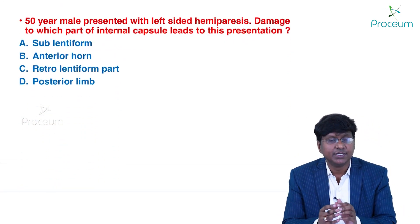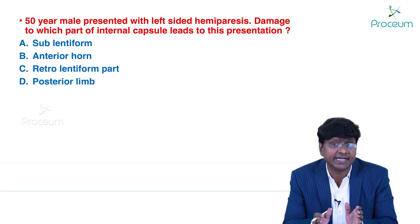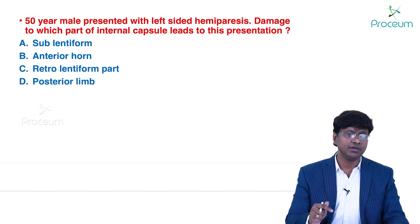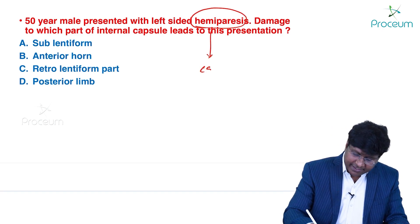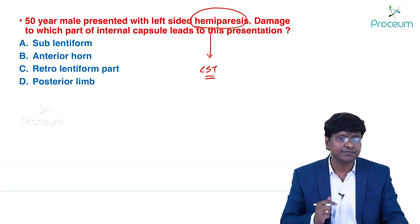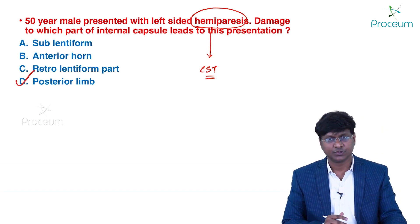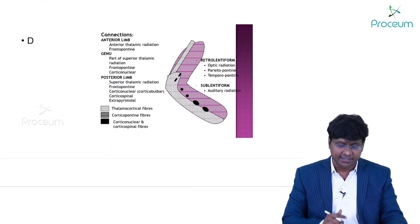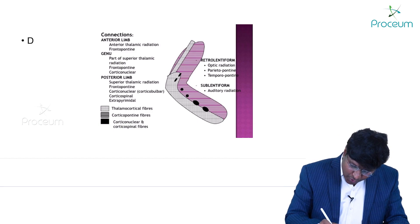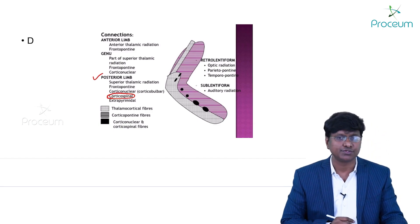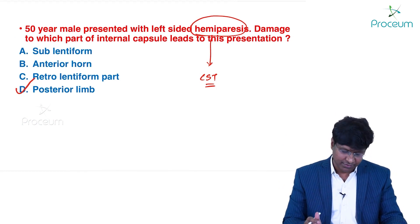A 50-year-old male with pure motor left-sided hemiparesis: which part of the internal capsule is damaged? Pure motor hemiparesis requires damage to the corticospinal tract, which runs densely through the posterior limb of the internal capsule. The internal capsule has anterior limb, genu, and posterior limb. The answer is the posterior limb (posterior heel) of the internal capsule.